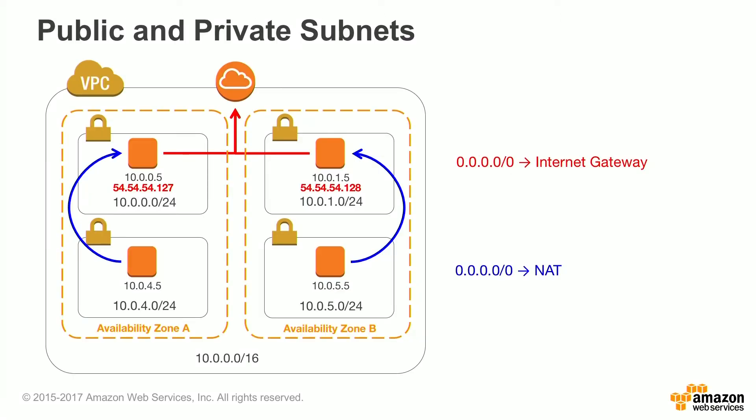When you look within a VPC, you can define public and private subnets, just as you do today if you think of DMZ and secure subnets. You can take instances in multiple availability zones and multiple subnets and control access and control the path. In this example, we have two hosts sitting with public IP space that go out an internet gateway, while hosts at the bottom of this slide go out through NAT hosts to get to the internet. Access between all of the hosts is monitored and controlled via security groups, which are stateful firewalls, and network ACLs, which are stateless controls of the route.